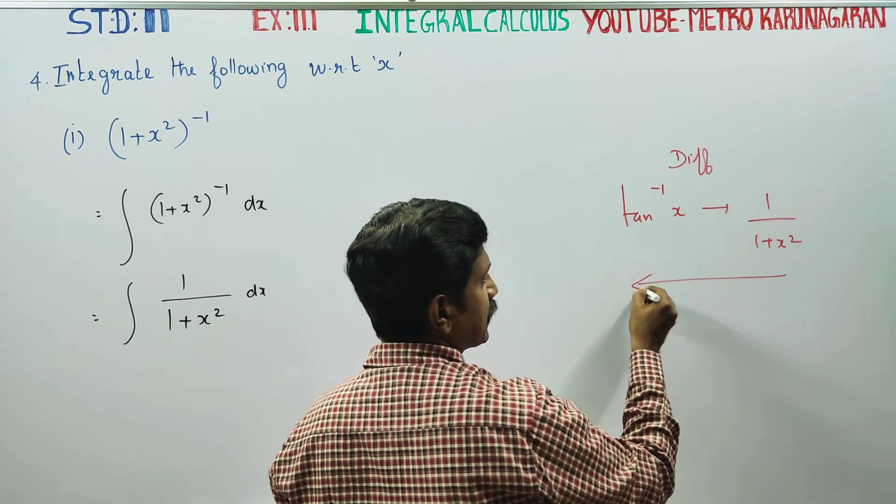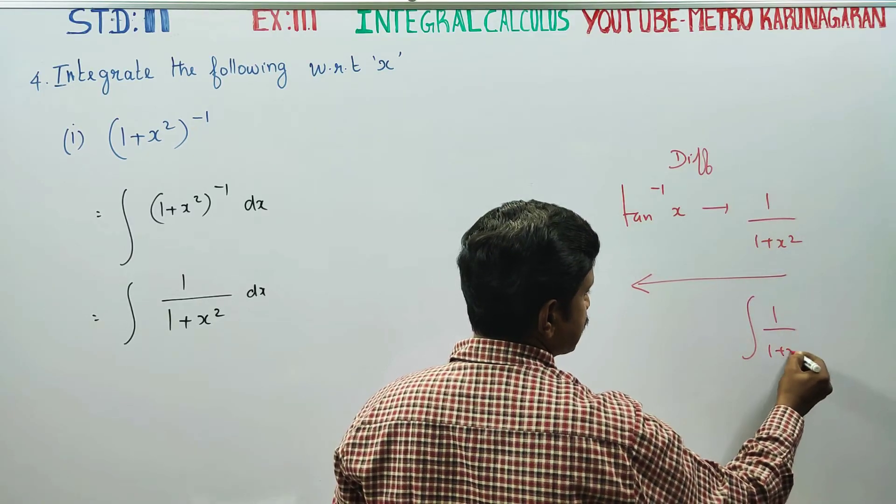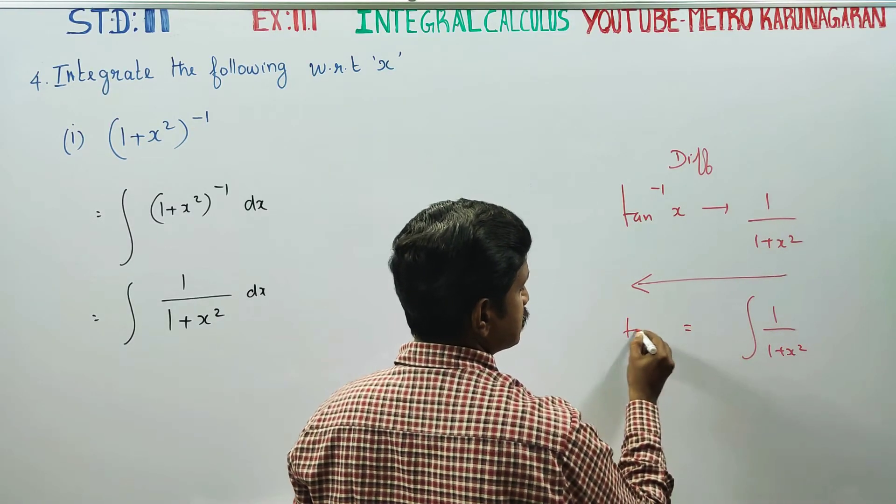The opposite process is integration. Integration of 1/(1+x²), the answer is tan⁻¹(x).